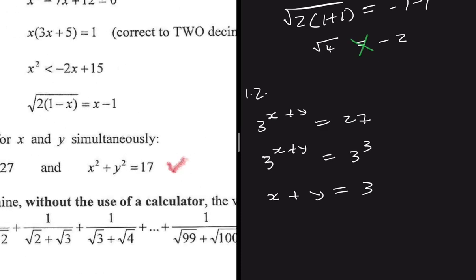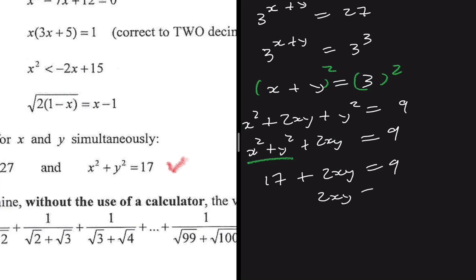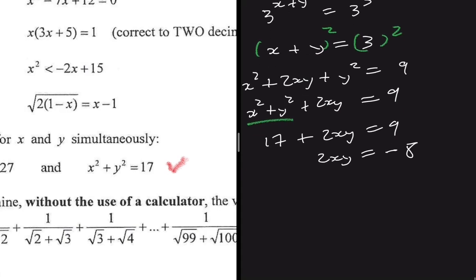We also know x squared plus y squared equals 17. Let's square x plus y equals 3: we get x squared plus 2xy plus y squared equals 9. Rearranging, x squared plus y squared plus 2xy equals 9. Substituting x squared plus y squared equals 17 gives 17 plus 2xy equals 9, so 2xy equals minus 8.